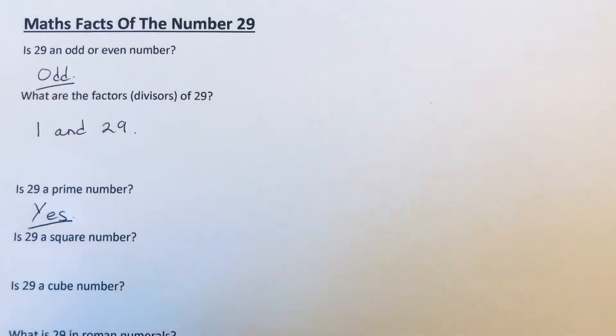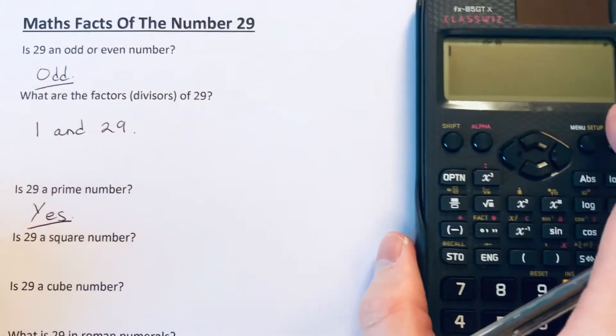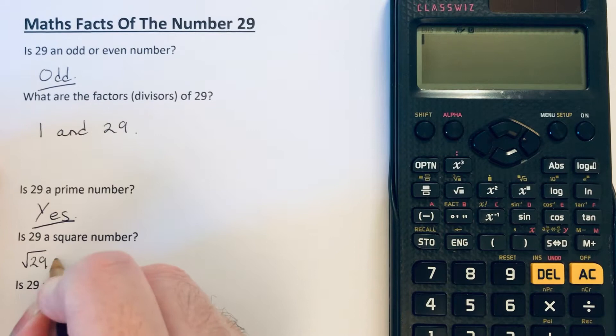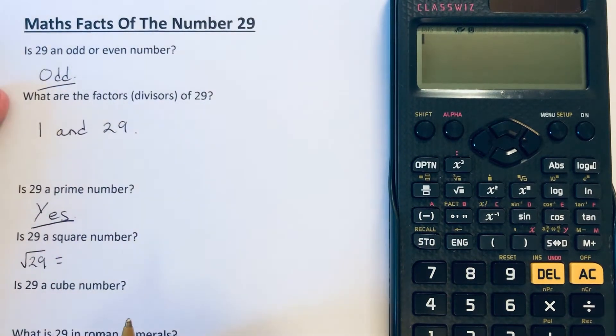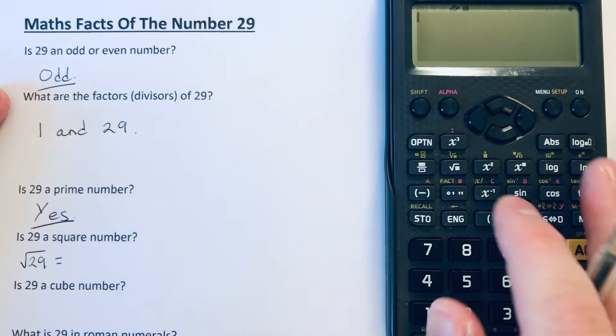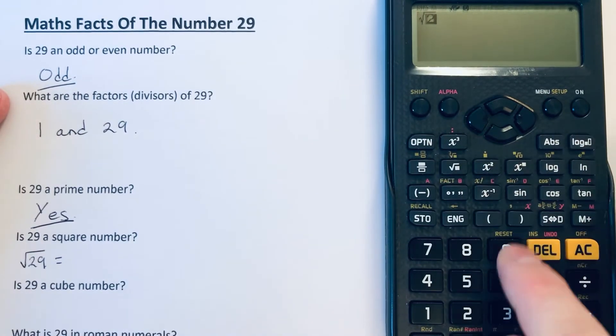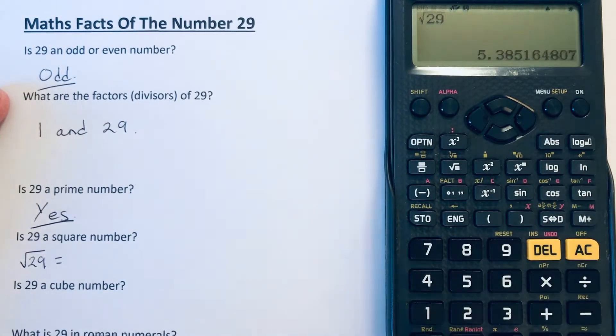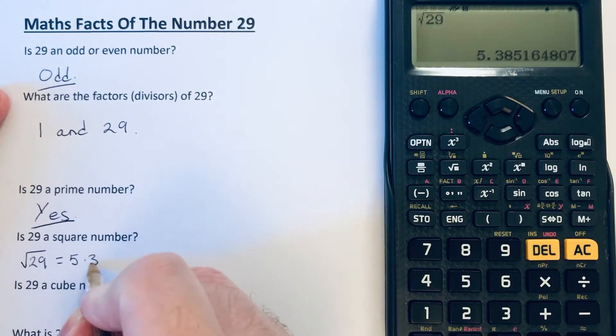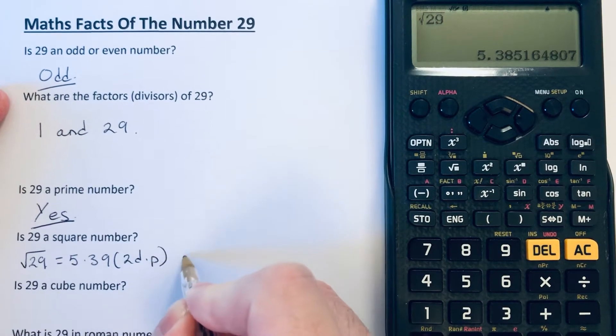Is 29 a square number? If it's a square number, we should be able to square root 29. And if it comes out as a whole number, then 29 would be a square number. So the square root of 29, we get 5.39 to two decimal places. So the answer to this question is no.